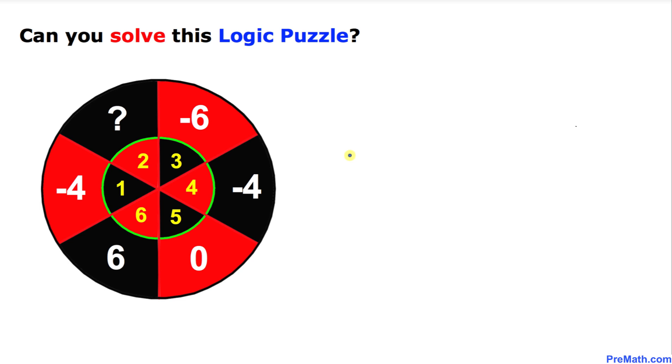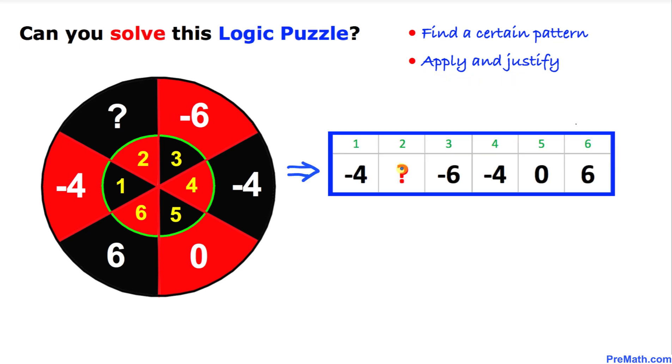Let's go ahead and get started with the solution. Here's the very first thing we are going to do: let's look for a certain pattern and then we are going to apply and justify. In order to keep things simple, I have translated these numbers from this dartboard into a linear scheme as you can see in this table right here.